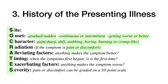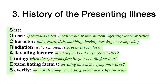E stands for Elevating factors: ask whether anything makes the symptoms better. T is for Timing: ask when the symptoms first began and whether the patient is experiencing them for the first time. E also covers Exacerbating factors: ask whether anything makes the symptom worse. Finally, S is for Severity — pain or discomfort can be graded on a 10-point scale.